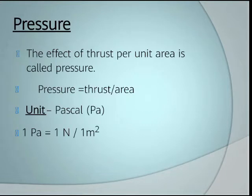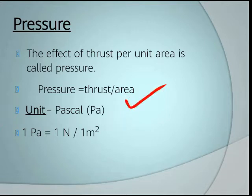Now, what is pressure? The effect of thrust per unit area is called pressure. Pressure equals thrust per unit area. The unit of pressure is Pascal. 1 Pascal equals 1 Newton per meter square.